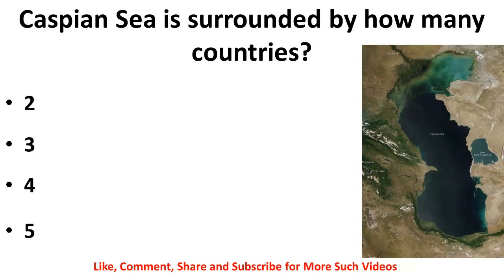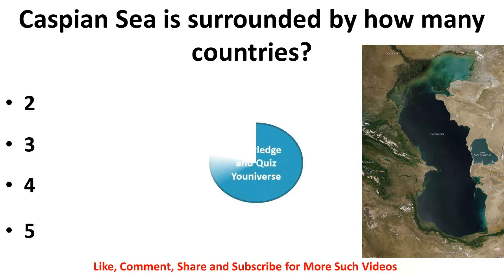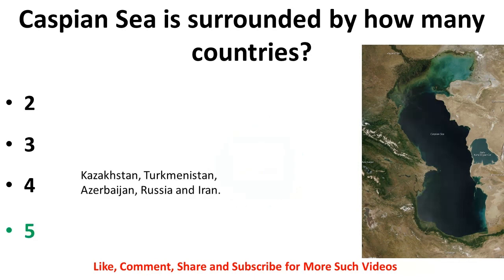The Caspian Sea is surrounded by how many countries — two, three, four, or five? The correct answer is five. The names of these countries are Kazakhstan, Turkmenistan, Azerbaijan, Russia, and Iran.